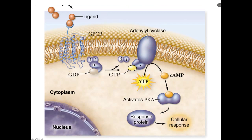Adenylyl cyclase becomes activated by the alpha subunit of an activated G-protein associated with a G-protein coupled receptor that responds to ligand. When adenylyl cyclase is activated, it produces cyclic AMP from an ATP precursor and also releases two inorganic phosphates.